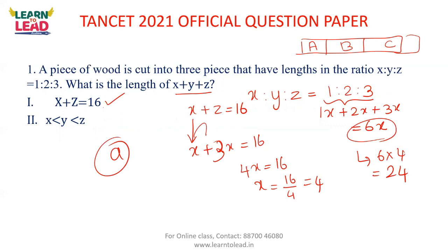A piece of wood is cut into three pieces that have lengths in the ratio x to y to z. What is the length of x, y and z? We are given the total length and the ratio 1 is to 2 is to 3. What is the length of x plus y plus z?